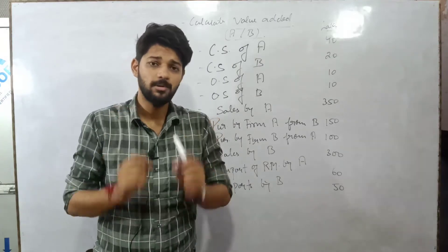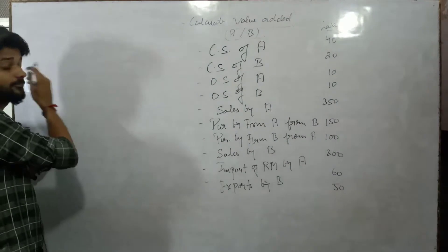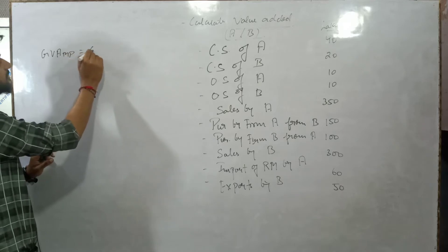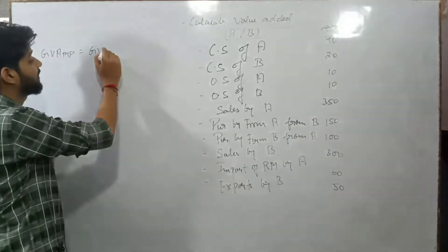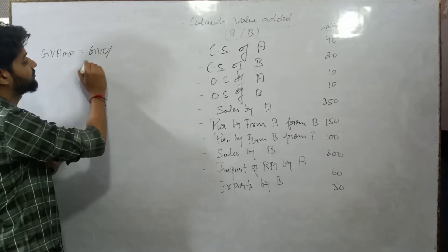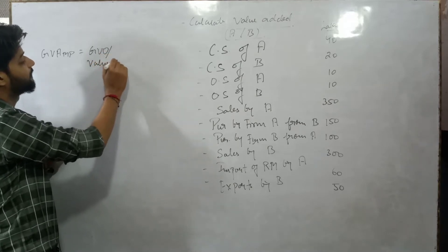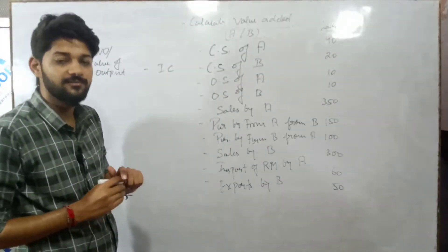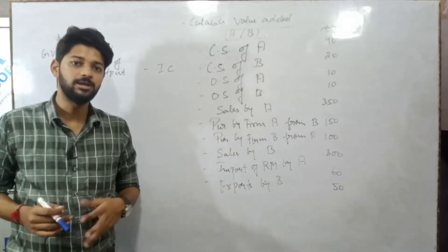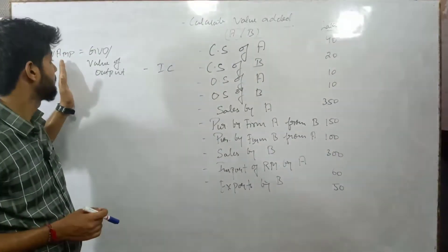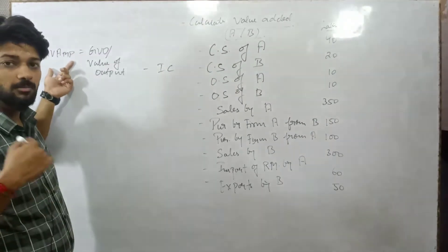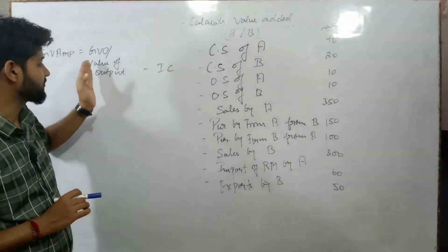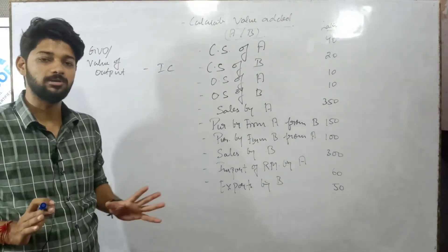You have to remember the formula. If we use the production method, then: Gross Value Added at Market Price (GVA at MP) equals Gross Value of Output minus Intermediate Consumption. This is also called GDP at MP — Gross Domestic Product at Market Price. The same value is just equal to Value of Output minus Intermediate Consumption.